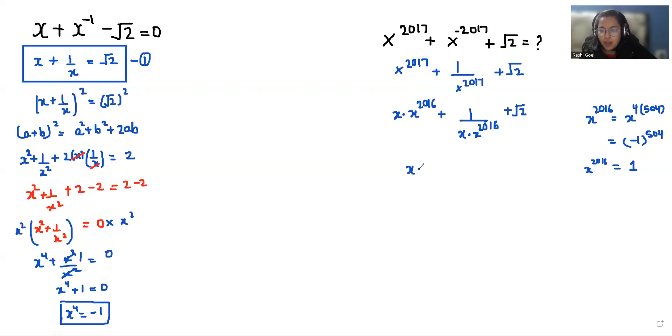So it becomes x times 1 plus 1 over x times 1 plus root 2, which simplifies to x plus 1 by x plus root 2. With the help of equation number 1, we can put the value of x plus 1 by x as root 2. So root 2 plus root 2 is 2 root 2. So the final value of this expression is 2 root 2.